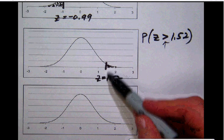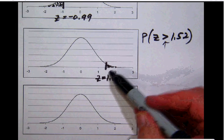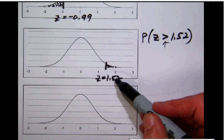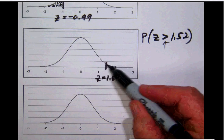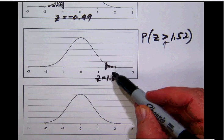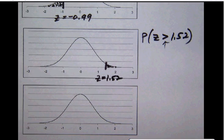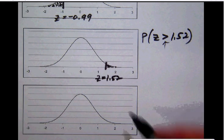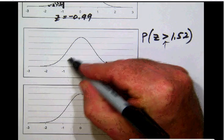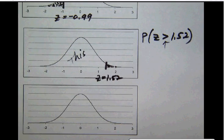So we look at our little graphical display here. Here's one, here's two, here's approximately 1.52, and we want this area over here to the right. Now remember that the ALEKS calculator tells us not the area to the right but the area to the left. It will give us this area, which is not what we want.